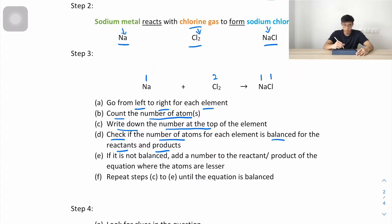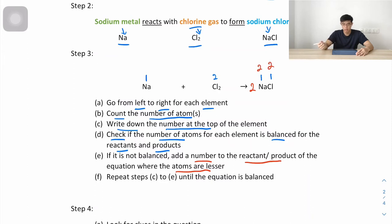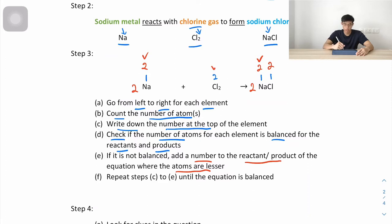We add a 2 to NaCl, giving us 2 chlorine on the right. Then for sodium, we also add a 2 on the left (2Na) to match. Checking: sodium is 2 and 2 — balanced. Chlorine is 2 and 2 — balanced. This is the balanced chemical equation: 2Na + Cl₂ → 2NaCl.